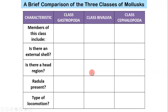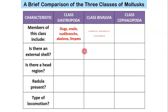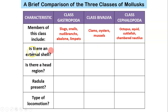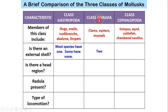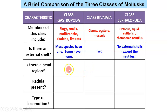You have a comparison table in your notes — you may need to pause the video to fill this out. It's a great summary of the differences between the three classes. For external shell: most gastropods have one, though slugs and nudibranchs don't; bivalves have two (remember, 'bi' means two); cephalopods don't have an external shell, except for the chambered nautilus. I'll be showing you clips of the nautilus in class.